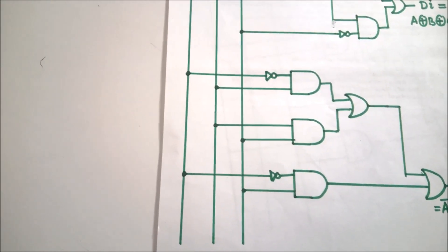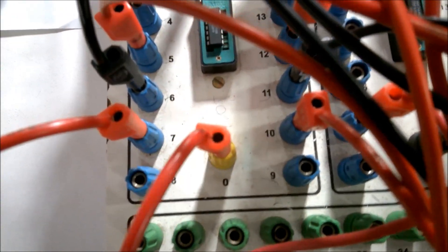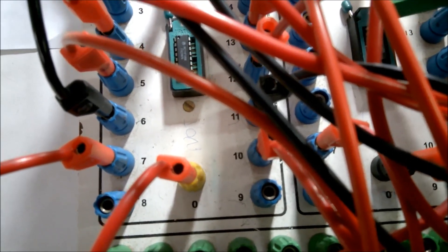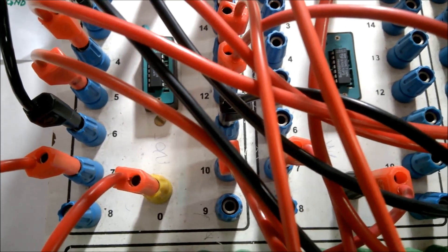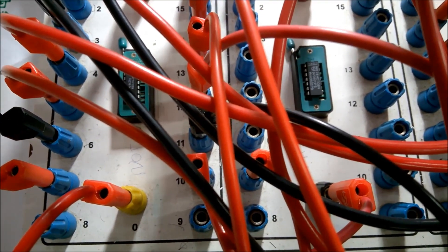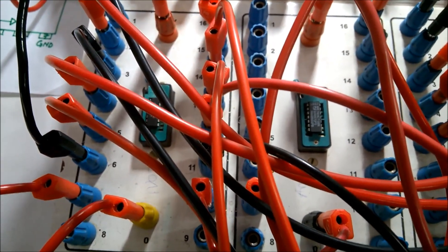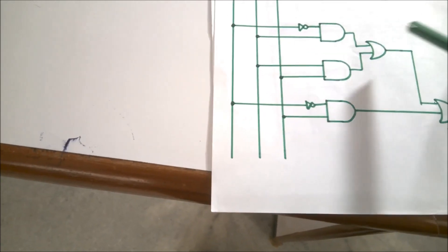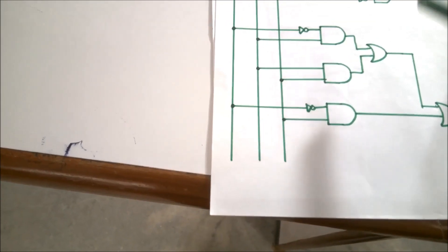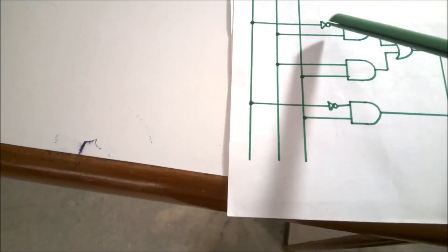We require another 3 AND gates, which will be in the second IC (7408). AND gate numbers 1, 2, and 3 in the second IC will be used for Borrow. We do not require an extra second IC for OR or NOT gates. After completing all connections, we will verify the truth table.